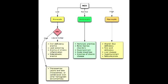What is macrocytic anemia? Macrocytic anemia is a type of anemia in which the average size of erythrocytes is larger than normal. In macrocytic anemia, the MCV is generally greater than 100.